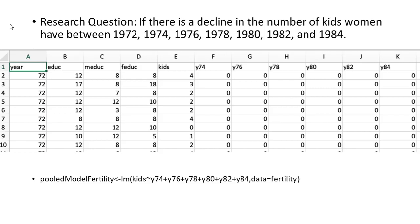Here, I want to use an example to show everyone how to analyze pooled data in our software. I want to test my hypothesis: if there is a decline in the number of kids women have during the years 1972, 74, 76, 78, 80, 82, and 84. So I collect data about how many kids each woman has during these years.